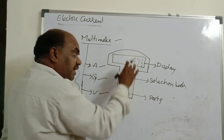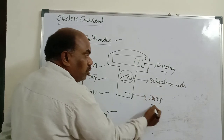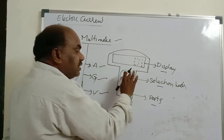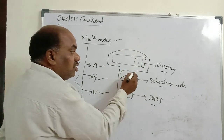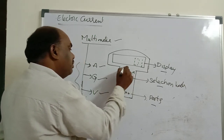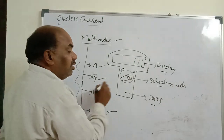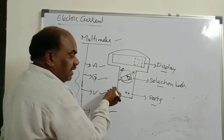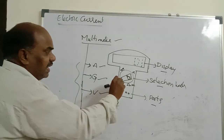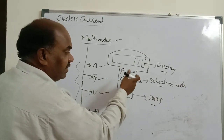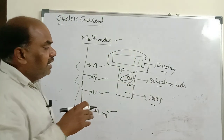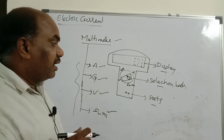Multimeter consists of three main parts: display, selection knob, and ports. If the arrow mark of the selection knob is placed on ammeter, it acts as an ammeter. If placed on milliampere (MA), it acts as a galvanometer. If placed on V, it acts as a voltmeter. If placed on ohmmeter, it measures resistance. Ports: two types — one black (common port, COM) and one red (MAV omega port).